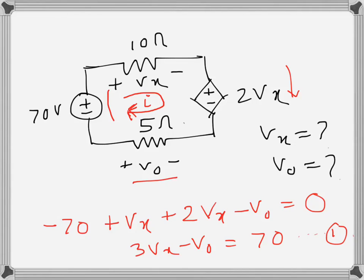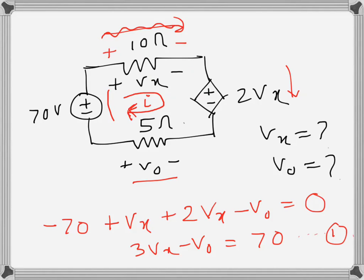And then we try to write Ohm's law for this resistance. This one is 10 ohms, and the direction of current is in this direction—the current is flowing, so the drop should be from here to here, and that is what vx is. So that is the correct drop, so the sign is correct. So 10i is equal to vx, and from here I get i is equal to vx over 10.